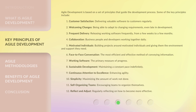Agile development is based on a set of principles that guide the development process. Some of the key principles include: 1. Customer satisfaction — delivering valuable software to customers regularly. 2. Welcoming changes — being able to adapt to changing requirements, even late in development. 3. Frequent delivery — releasing working software frequently, from a few weeks to a few months.